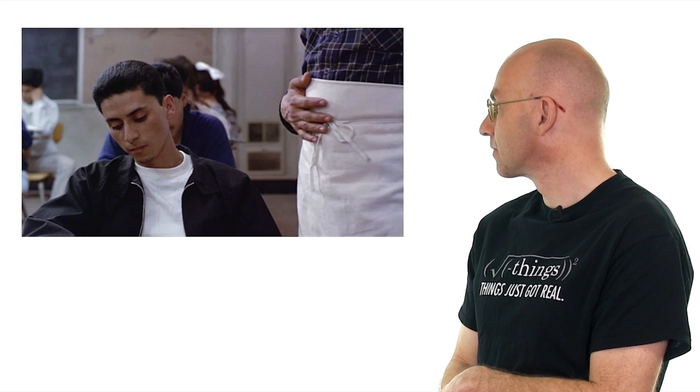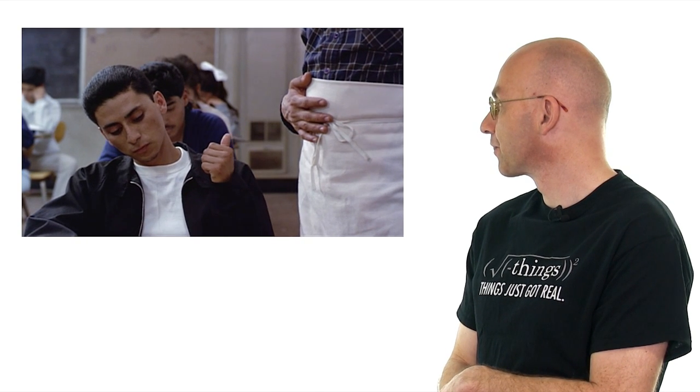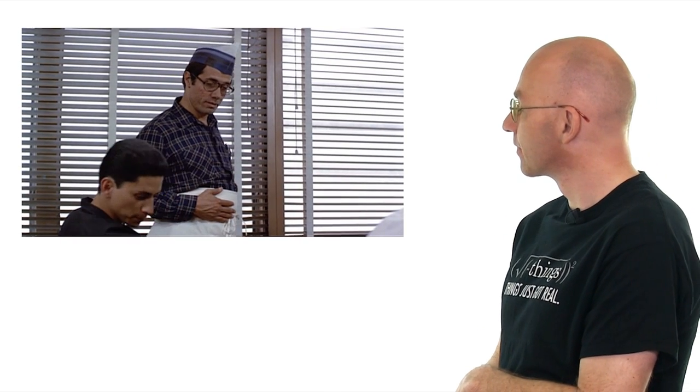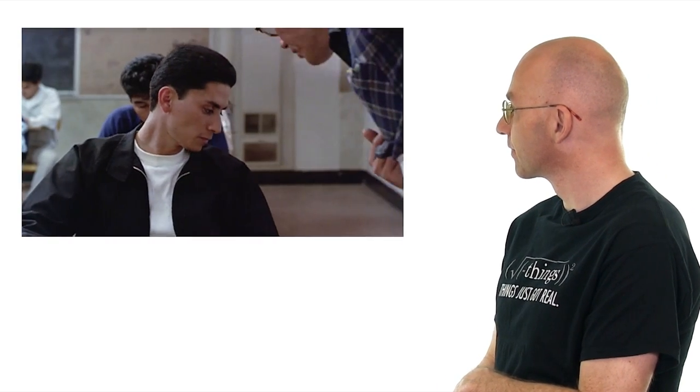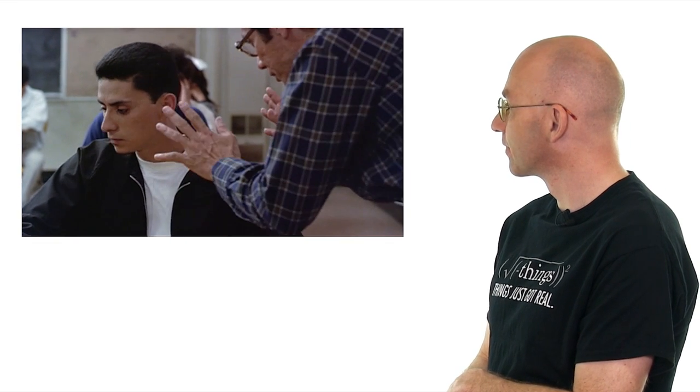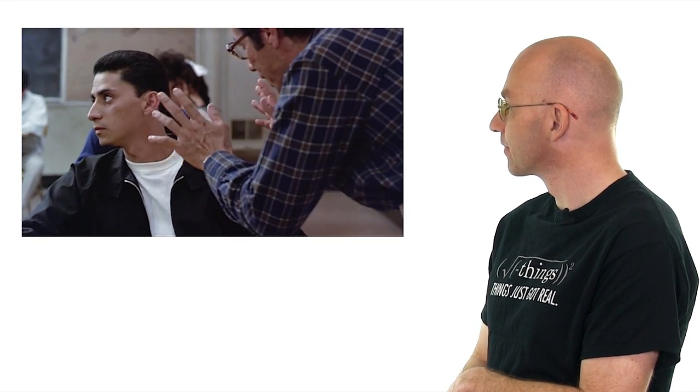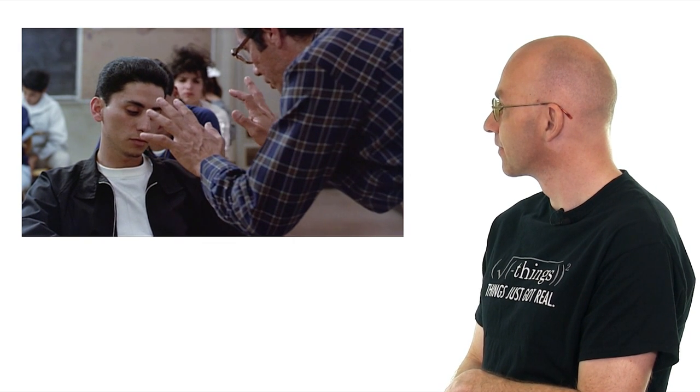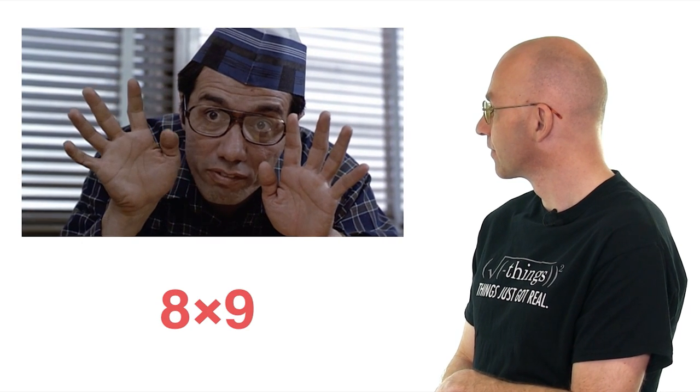You know the times tables? I know the ones, the twos, the threes. Fingerman, I heard about you. Are you the fingerman? I'm the fingerman too. You know what I can do? I know how to multiply by nine. Nine times three. One, two, three. What do you got? Twenty-seven. Six times nine. One, two, three, four, five, six. What do you got? Fifty-four. You want a hard one? How about eight times nine? One, two, three, four, five, six, seven, eight.